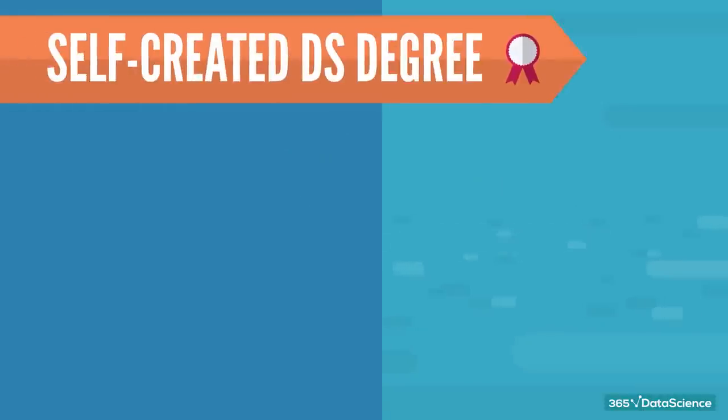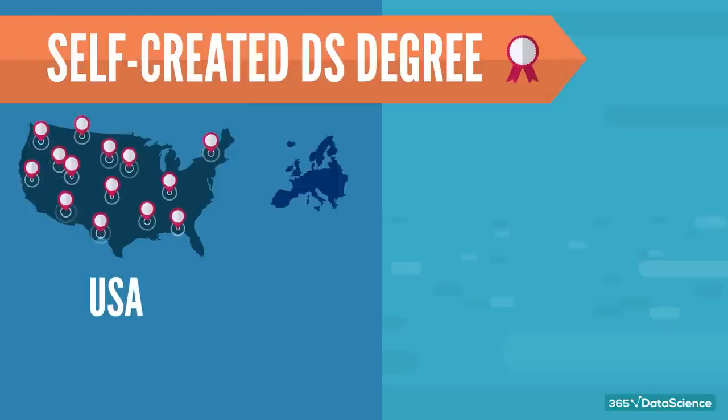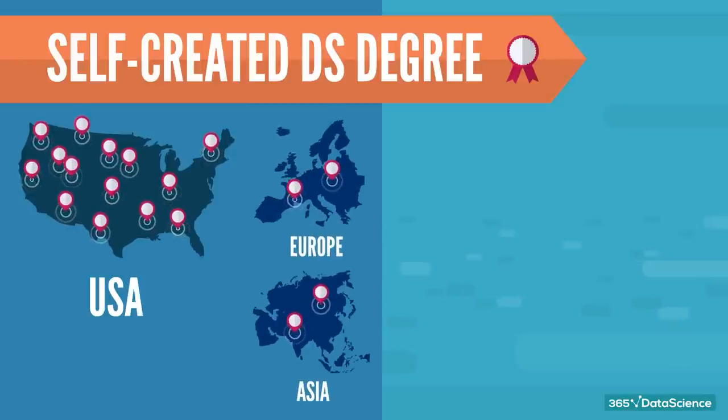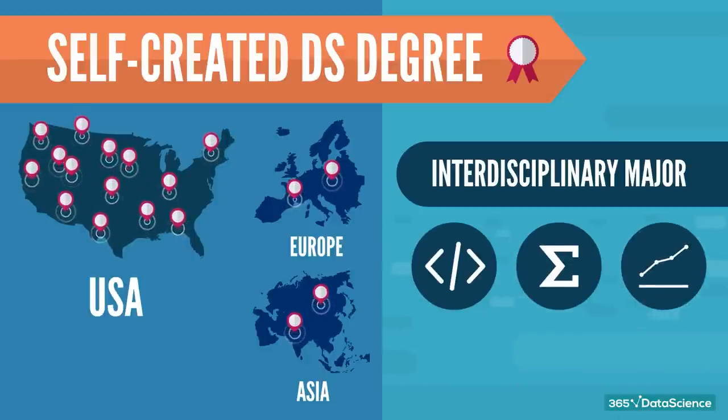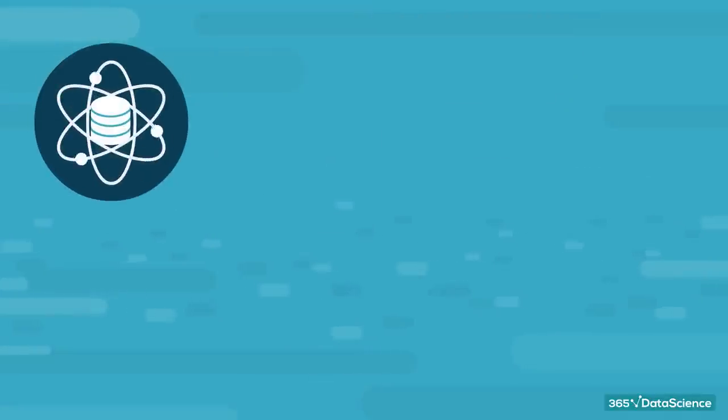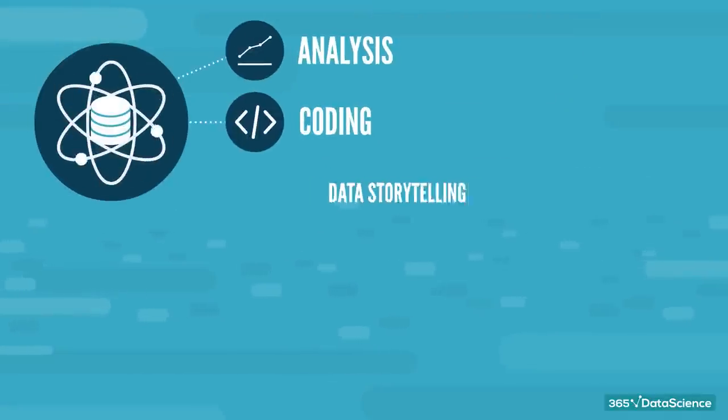Enter the self-created data science degree. Now, in many places across the United States, and less so in Europe and Asia, it is possible to change your concentration to an interdisciplinary major. These are the so-called self-created majors, which incorporate various courses across several departments. Since data science is a nice mix of analysis, coding, and data storytelling...